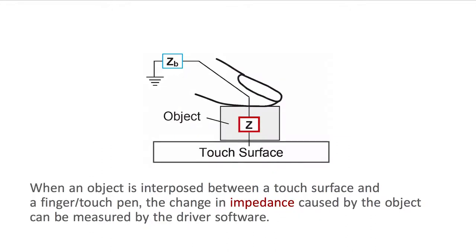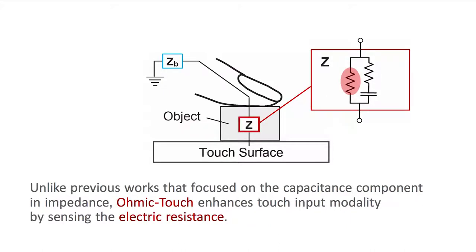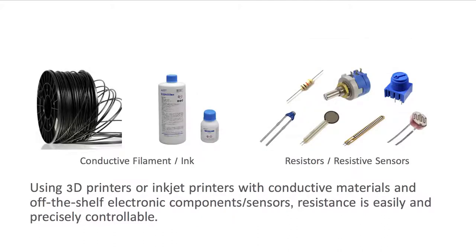When an object is interposed between a touch surface and a finger or a touch pen, the change in impedance caused by the object can be measured by the driver software. Unlike previous works that focused on the capacitance component in impedance, Ohmic touch enhances touch input modality by sensing the electric resistance. Using 3D printers or inkjet printers with conductive materials, and off-the-shelf electronic components or sensors, resistance is easily and precisely controllable.